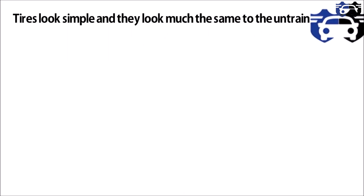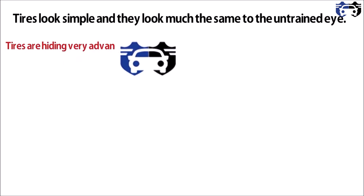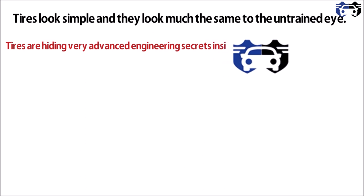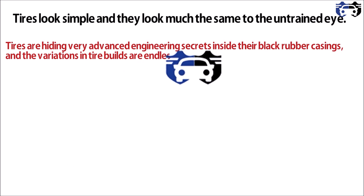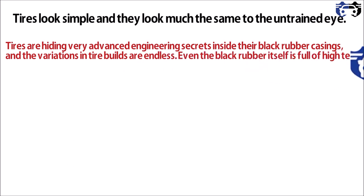Tires look simple and they look much the same to an untrained eye. If you give different tires to an untrained person, they will say all the tires are the same — but they are not. Tires differ in various things and lots of engineering is involved. For example, tires can differ in the percentage of rubber or in the make, whether it is a radial or biased tire. Tires hide very advanced engineering secrets inside their black rubber casing, and the variation in tire builds is endless.